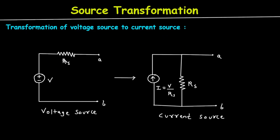Here we can see a series circuit where there is a voltage source connected in series with resistor RS. If we want to convert this voltage source into its equivalent current source, we have to connect a current source in parallel with RS. The polarity of this voltage source has the positive side upward and the negative side downward, so the direction of the arrow of the current source will be upward.